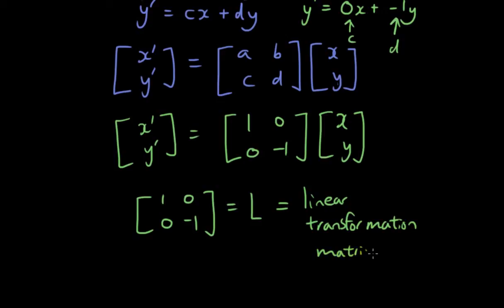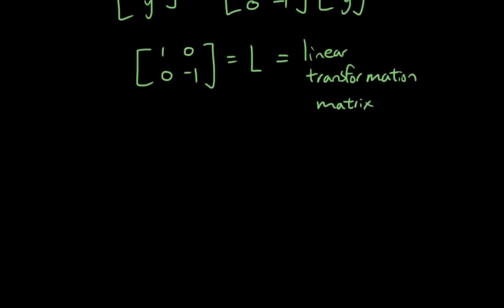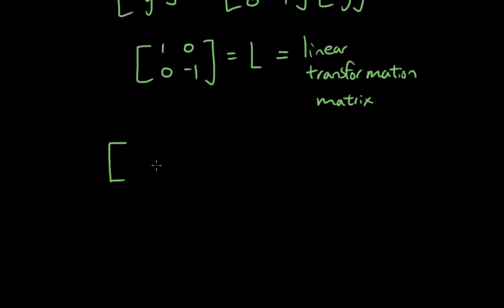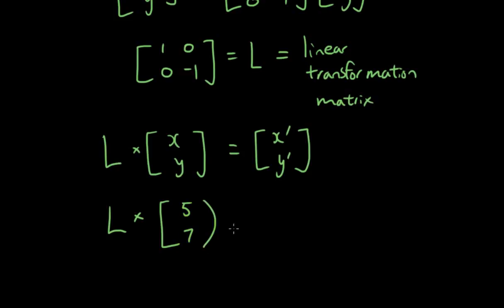So using matrices, I can simply use this linear transformation matrix to multiply by any point. So L times any point will give us the image. So let's try it with any two points. L times, let's say, [5, 7].